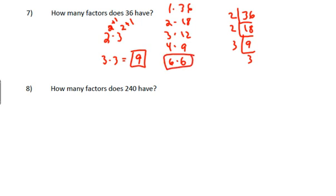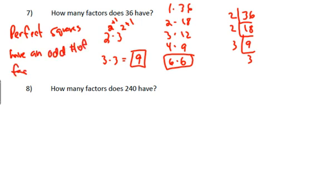That means there's only one six that's a factor. So even though you've got five factor pairs, there's only nine factors because the six only gets counted once. What that tells you is perfect squares always have an odd number of factors.